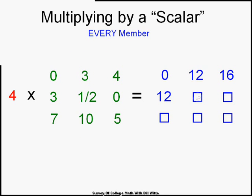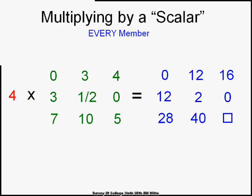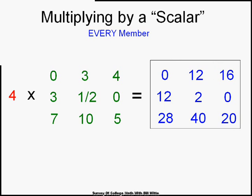Don't let fractions scare you either — for example 4 times a half. All you have to do is make sure everything ends up in the same place. 4 times 7, 4 times 10, 4 times 5 — so that's multiplying by a scalar. All you do is multiply each and every member of this single matrix by the scalar or number. Not too hard.